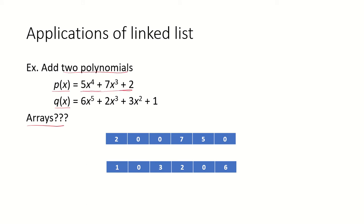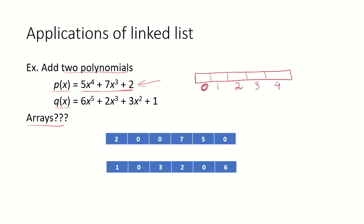Suppose we have to represent polynomial P(x). How can we do so? Suppose we have an array of size 5, with indices 0, 1, 2, 3, 4, and each index or subscript we will assume as the power of x. So index 0 represents x to the power of 0, index 1 represents x to the power of 1, index 2 represents x to the power of 2, and so on.